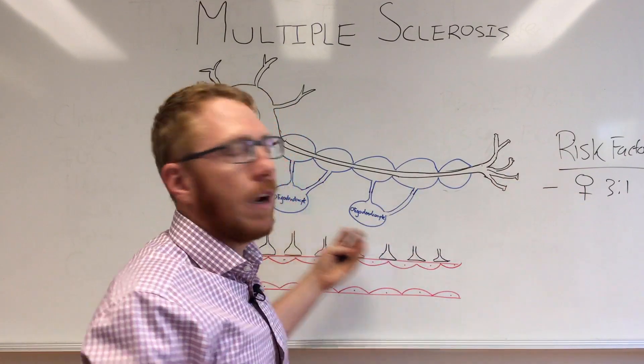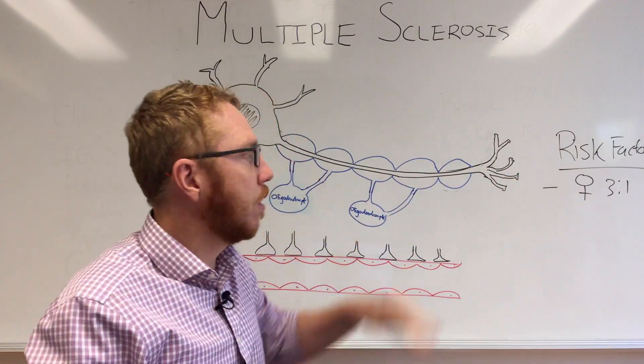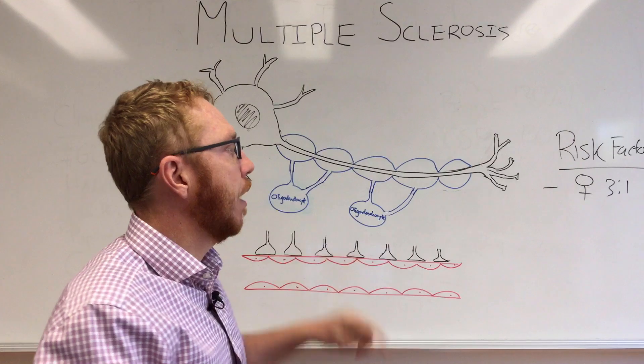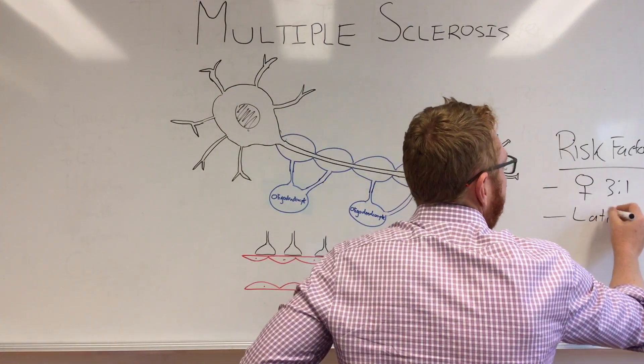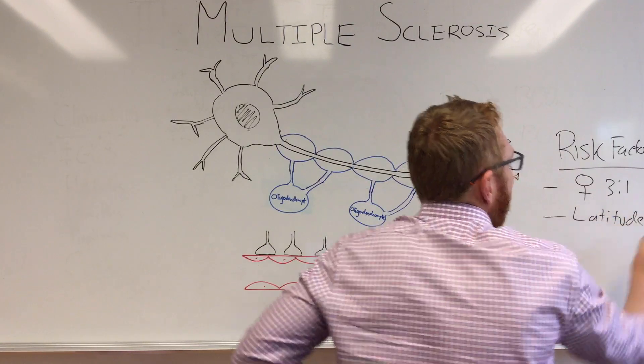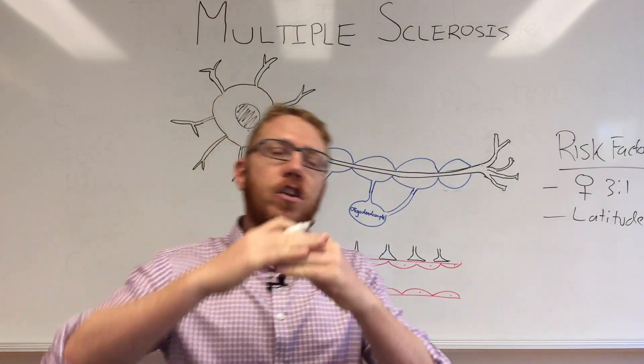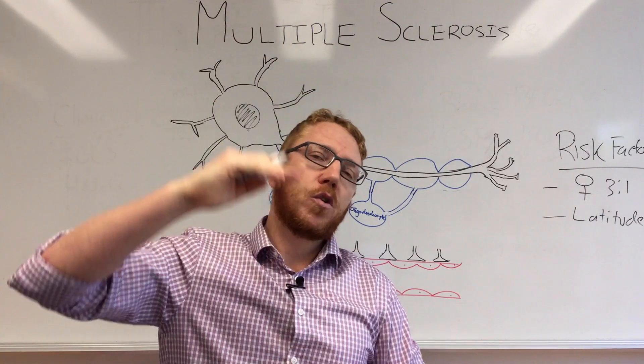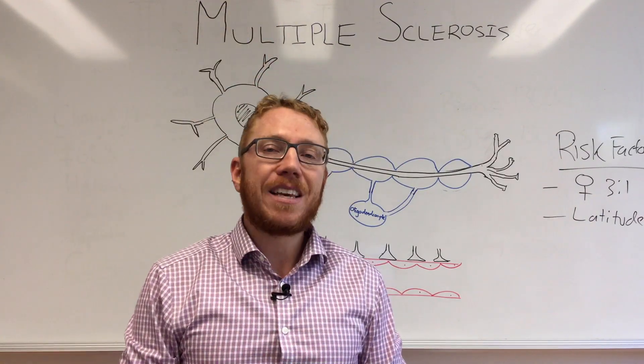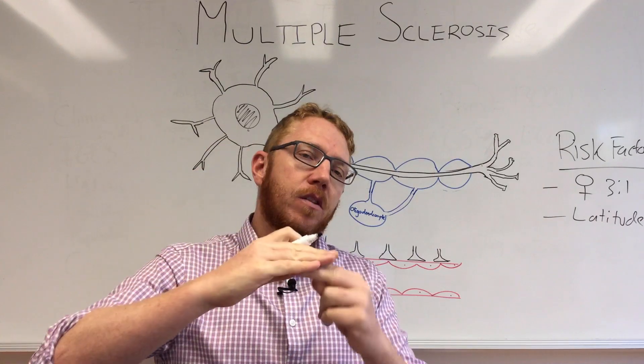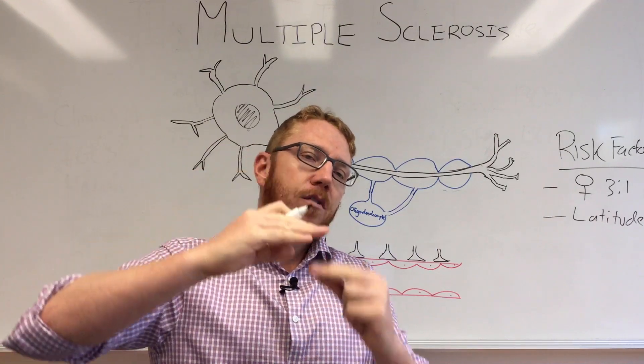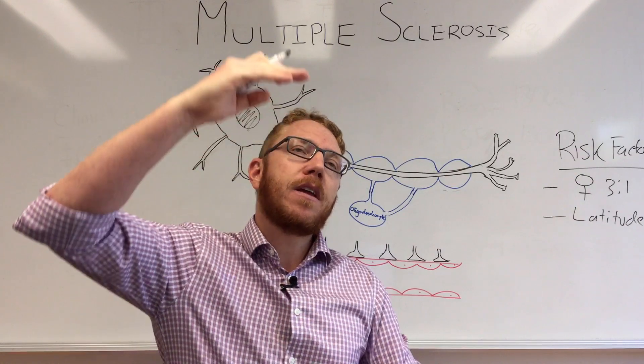When we discuss these risk factors I'll actually incorporate them a bit later when we do the pathophysiology. Another one is latitude. It appears that as you move away from the equator and go towards the poles, the risk increases - and that is both in the northern hemisphere and the southern hemisphere.